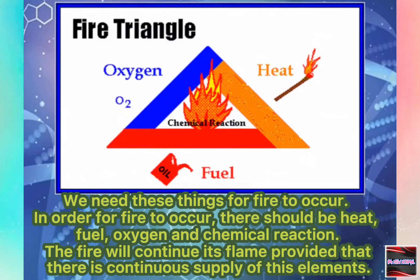We need these things for fire to occur. In order for fire to occur, there should be heat, fuel, oxygen, and chemical reaction. The fire will continue its flame provided that there is a continuous supply of these elements.